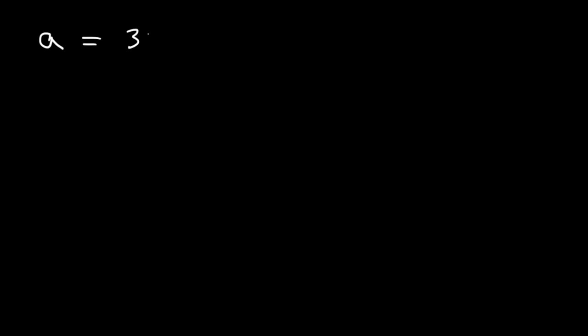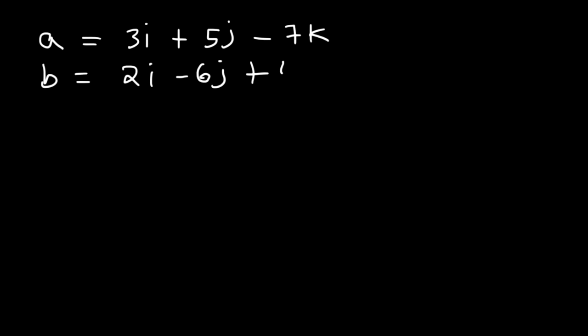In this video we're going to talk about how to find the cross product of two vectors. So let's say vector A is 3i plus 5j minus 7k, and vector B is 2i minus 6j plus 4k. What is the cross product of vectors A and B?